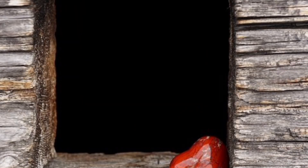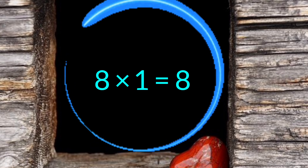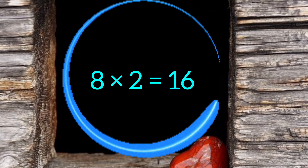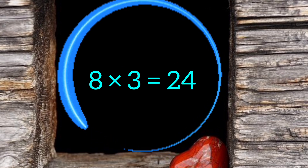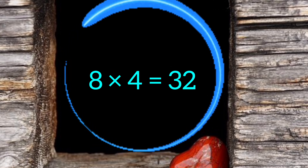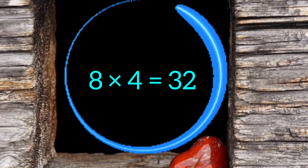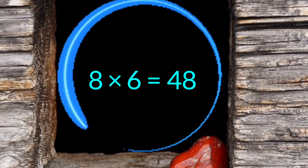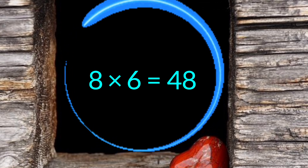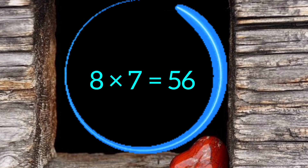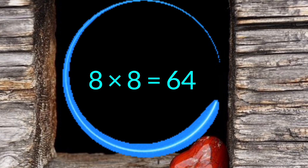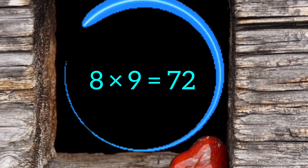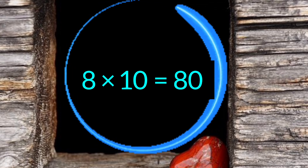Let's see once again. 8 1's are 8. 8 2's are 16. 8 3's are 24. 8 4's are 32. 8 5's are 40. 8 6's are 48. 8 7's are 56. 8 8's are 64. 8 9's are 72. 8 10's are 80.